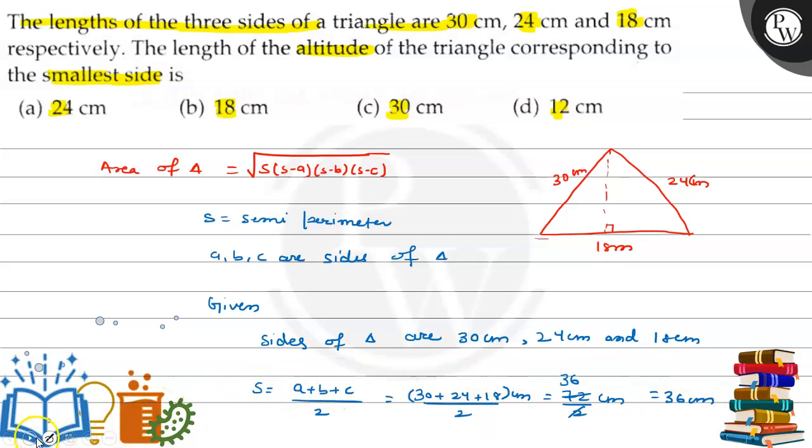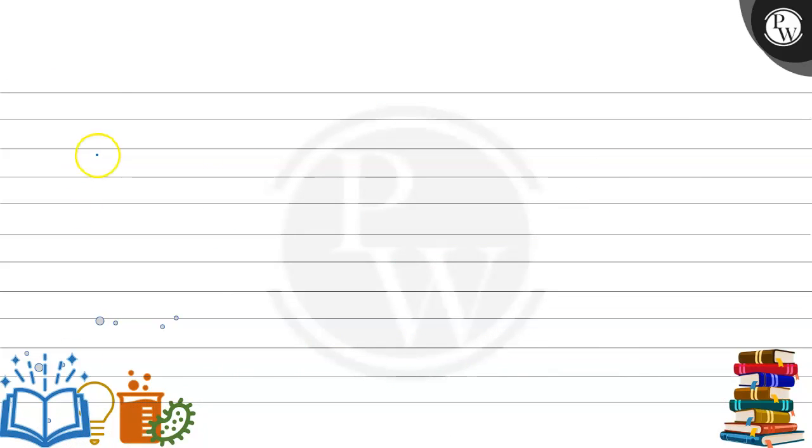Now I am finding the area. Area = √(S(S-A)(S-B)(S-C)) = √(36(36-30)(36-24)(36-18)) cm².